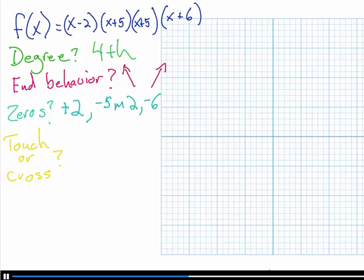Now, does it touch or cross at negative, sorry about that, at negative 2, since there's only one of them, and that's an odd number, it crosses the x-axis at 2. At negative 5, since there's a multiplicity of 2, which is an even number, that's only going to touch the x-axis. And at negative 6, since there's only one of them, it's going to cross the x-axis.